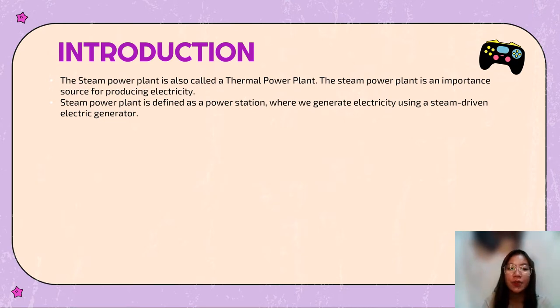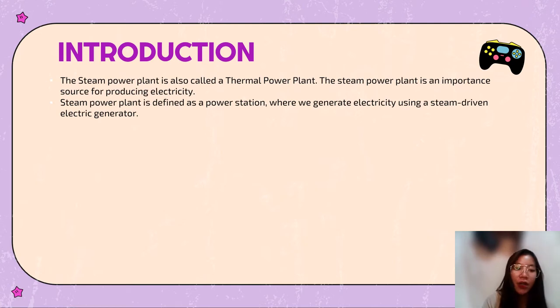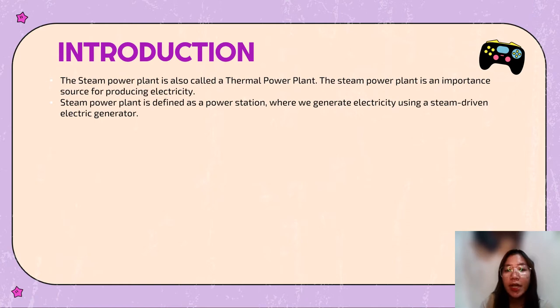Water is turned into steam and spins a steam turbine, which drives an electric generator. After it passes through the turbine, the steam is condensed in the condenser.